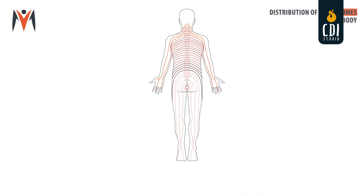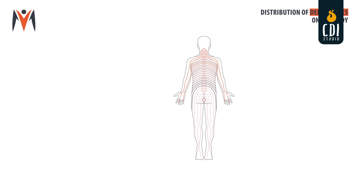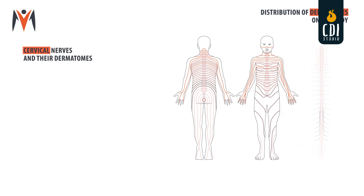Distribution of dermatomes on the body. The anatomical location of the dermatomes on parts of the body is as follows. Cervical nerves and their dermatomes.